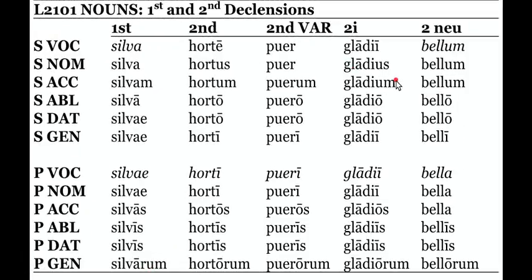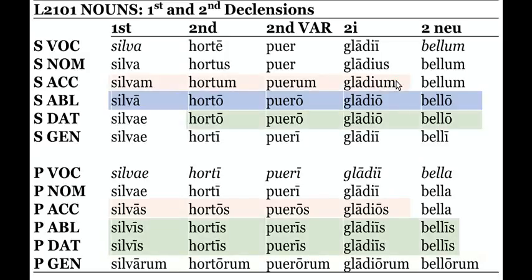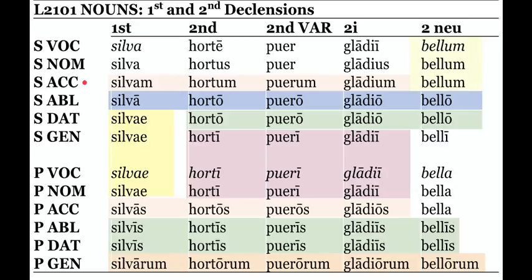Here are the noun declensions we're familiar with. Make sure you know all their forms and especially be able to identify the accusative plural as well as the ablative plural. Remember, these prepositions will only go with certain cases. Here we are with the first, second, second variation, as well as the 2-i and 2-neuter.